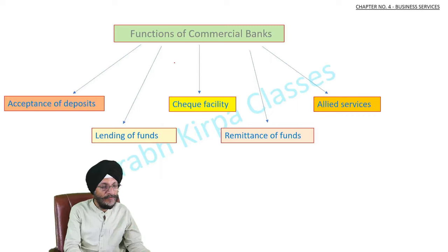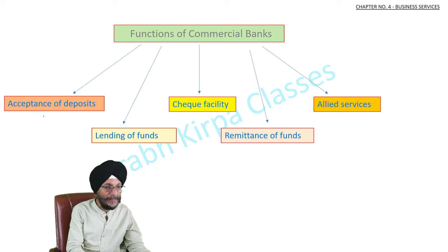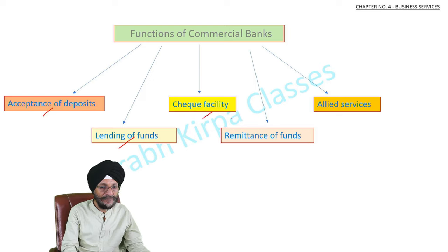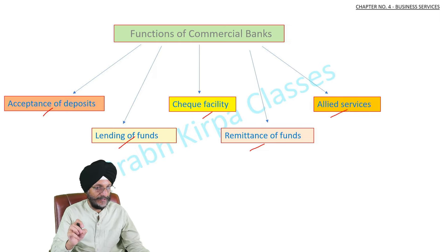Now we will understand the various functions of commercial banks. Among its functions are acceptance of deposits, lending of funds, check facility, remittance of funds and allied services. We will understand each of its functions one by one.